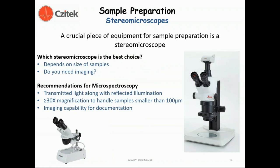A stereo microscope is indispensable. Stereo microscopes come in many shapes, sizes, and magnification capabilities. You can get one for a couple of hundred dollars that is perfectly adequate for most sample preparation. More sophisticated systems, like the Leica system shown on the right-hand side, cost several thousand dollars but have a much larger range of magnification, more working distance, flexibility, and a camera port to record images. We need greater than 30x magnification in our stereo microscope to handle samples smaller than 100 micrometers — that's an important thing to remember.